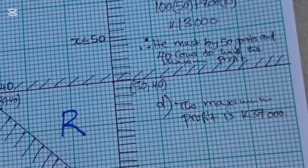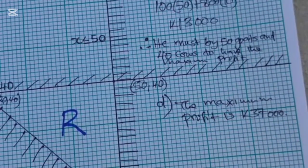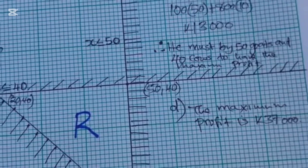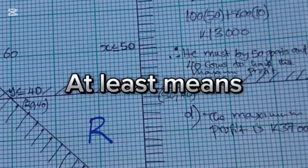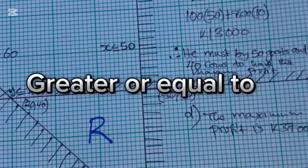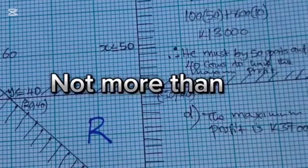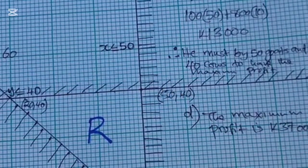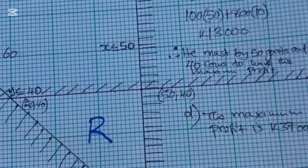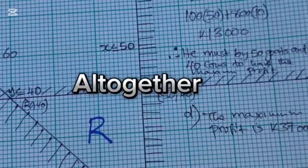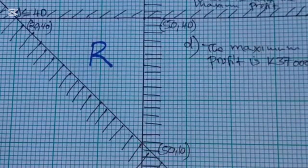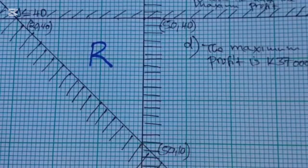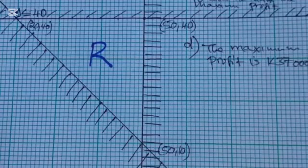In summary: 'at least' in linear programming means ≥; 'not more than' means ≤; and 'altogether' means you add the variables. Thank you for watching — please subscribe, like, comment, and share.